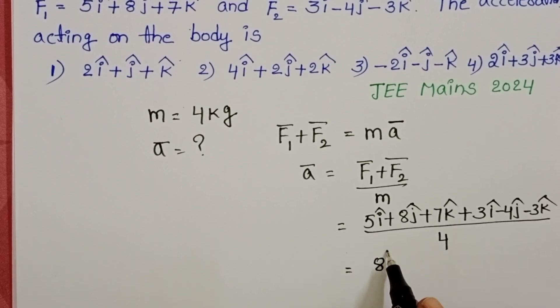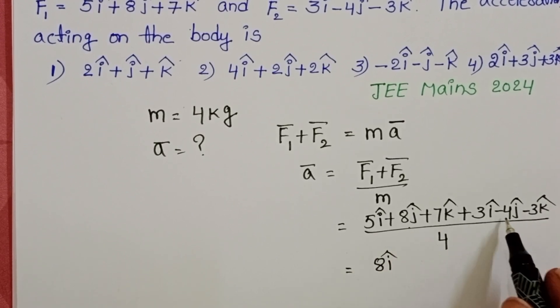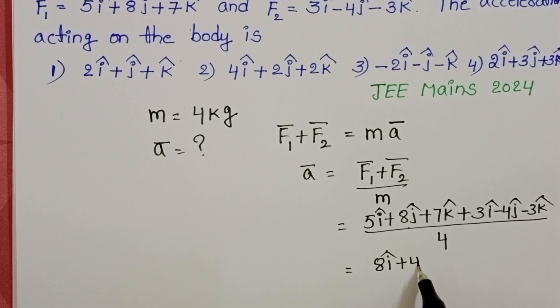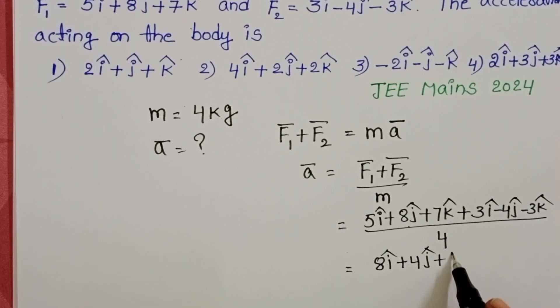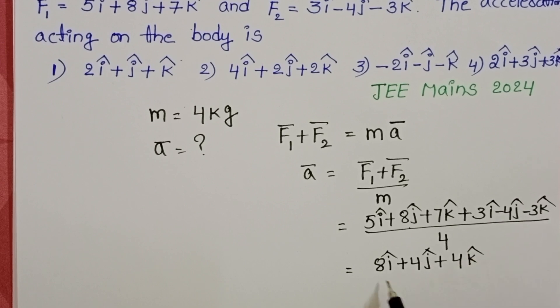8i, 8 minus 4 plus 4j, plus 7 minus 3, plus 4k cap by 4.